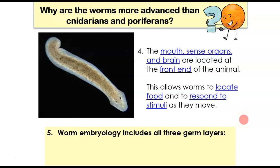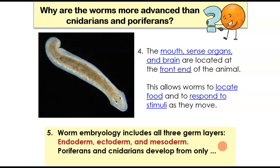Now, worm embryology includes all three germ layers. So even though flatworms are acoelomates, they still have all three germ layers. That's an advantage over cnidarians. And just as a reminder, those germ layers are endoderm, which is inside layer, the ectoderm, the outside layer, and the mesoderm, the middle layer. Poriferans, so sponges and cnidarians, develop from only two, or in the case of poriferan, one germ layer.